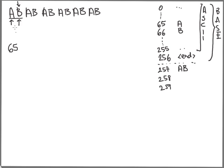We advance to the next character, which starts with B. The only string starting with B is just B itself, so we emit 66. We pick one character ahead — that is an A — and add BA to the dictionary. Now our pointer is at A, and we have two strings starting with A. We find AB is in there, so that is our best match, and we emit it.